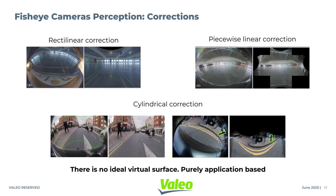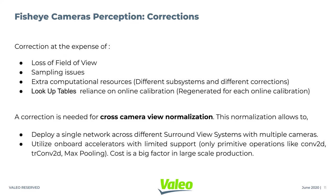Cylindrical, as a quasi-linear correction, offers a practical trade-off. Correction has disadvantages like loss of field of view, sampling issues, and extra computational resources, because your pipeline might have different algorithms demanding different view projections. Though lookup tables make this correction process accelerated, LUTs rely on online calibration, so we have to regenerate them every time there is a change in online calibration.